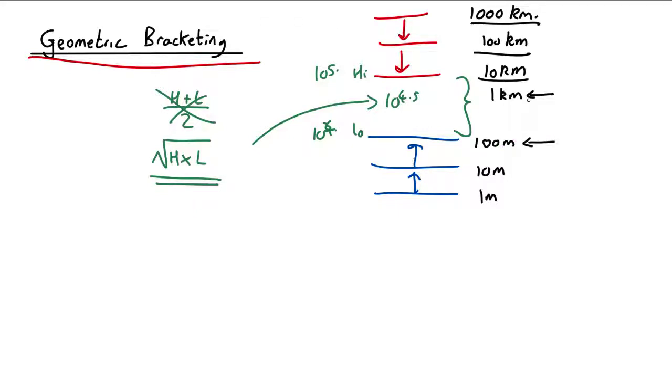It's more than 100 metres less than a kilometre. So that's 10 to the 3 metres and 10 to the 2. So the geometric mean is going to be 10 to the 2.5 which is about 300 metres.